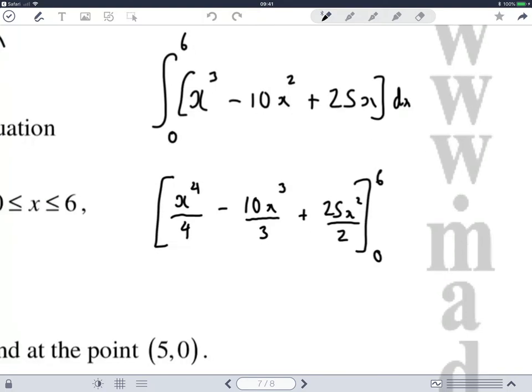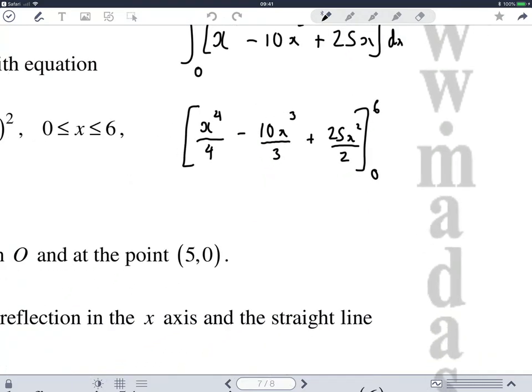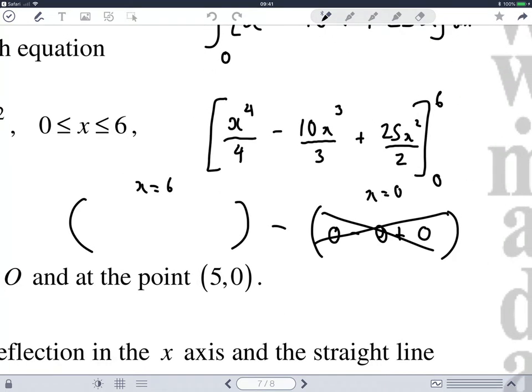So it's between six and zero. Now I'm going to substitute when x equals six, the upper limit into here, minus when x equals zero into the bottom limit. And clearly when x is zero, I've got zero to the four over four, which is zero, minus 10 lots of zero over three, which is zero, plus 25 zero squared over two. So this bracket is irrelevant.